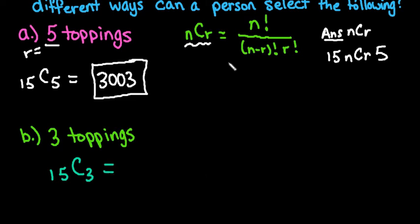So again, if you wanted to, you could plug this in. Basically, if you wanted to see how this would be set up in case you have to show work, this would be n factorial would be 15 factorial over 15 minus 3, which is 12 factorial, times r factorial, which is 3 factorial. So you can set it up this way.